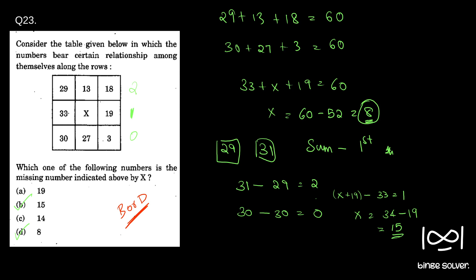And if you use the second logic, which is sum of these two, if you add to these two and subtract it with this, you will get 2 here and 0 here, so it has to be 1 here. In that logic also we can find the answer which will give 15 as the answer.